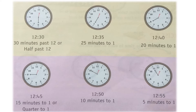In the next picture, the minute hand is at eight, so eight fives are 40 minutes. The time is 12:40, or 20 minutes to one, because there are 20 more minutes to reach one o'clock. In the following picture, the minute hand is at nine — nine fives are 45. There are 15 more minutes to reach one o'clock, so we say 15 minutes to one, or quarter to one.